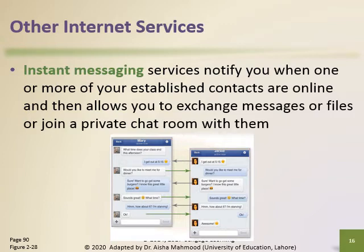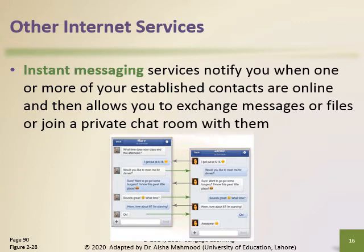Some internet messaging services support voice and video conversations, allow you to send photos and other documents, listen to streaming music and play games with another online contact. For real-time internet messaging to work, both parties must be online at the same time and the receiver must be willing to accept messages. To use an internet messaging service you may need to install messenger software or an app. Many online social networks include a messaging feature, and all individuals on a friend list need to use the same or a compatible messenger.